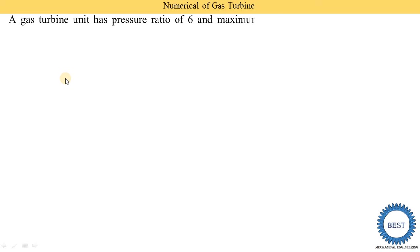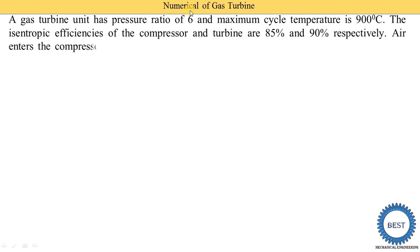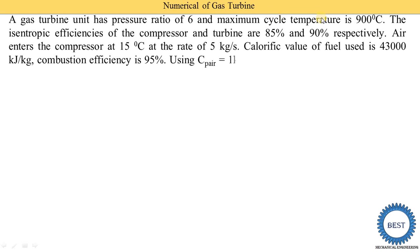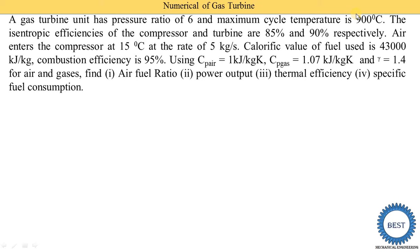A gas turbine unit has a pressure ratio of 6, meaning P2 upon P1 is equal to 6. Maximum cycle temperature is 900°C, which is the maximum temperature in the gas turbine power plant — so T3 = 900°C. The isentropic efficiency of the compressor and turbine are 85% and 90% respectively.